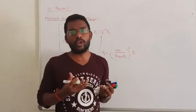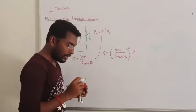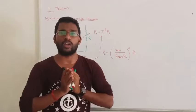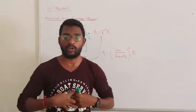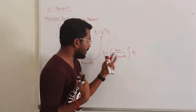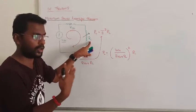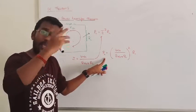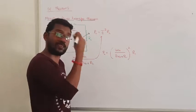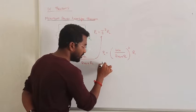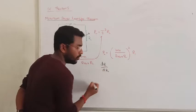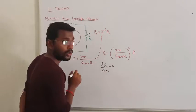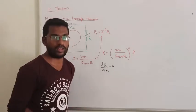To find the maximum value, we use differentiation. The load resistance is the variable. To find the point at which power is maximum, differentiate the power equation with respect to RL and equate it to zero.